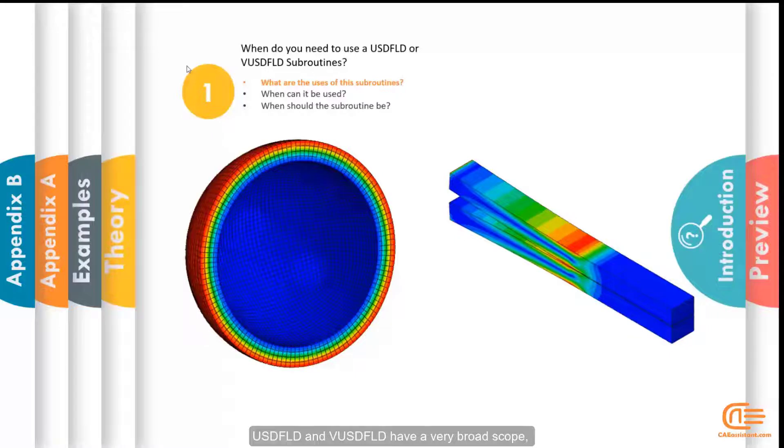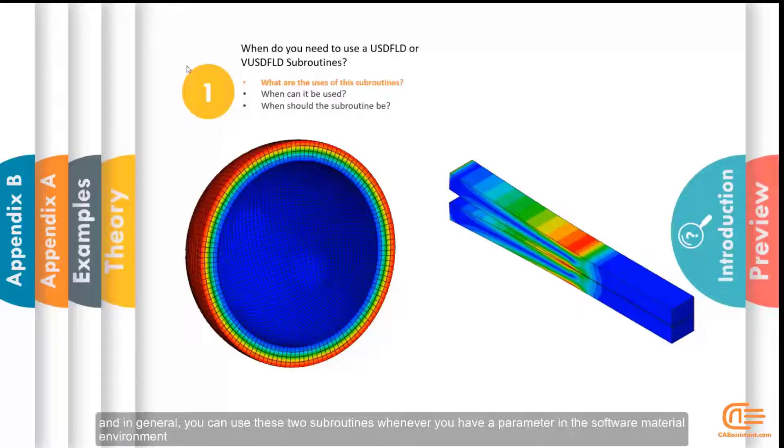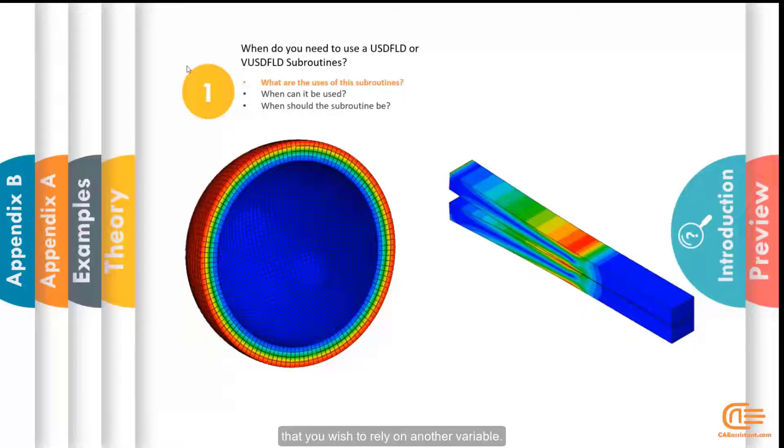USDFLD and VUSDFLD have a very broad scope. In general, you can use these two subroutines whenever you have a parameter in the software material environment that you wish to rely on another variable.